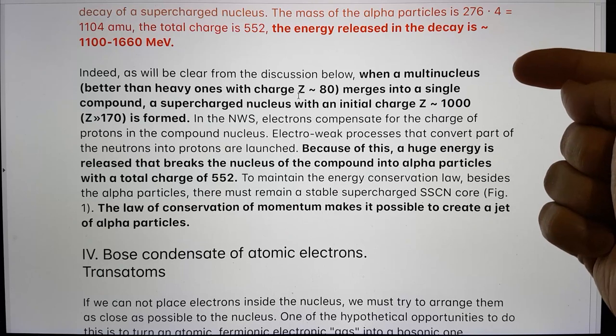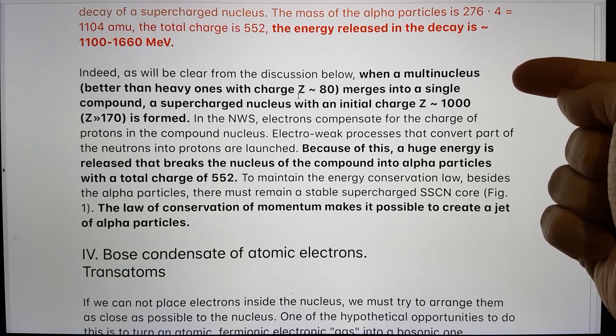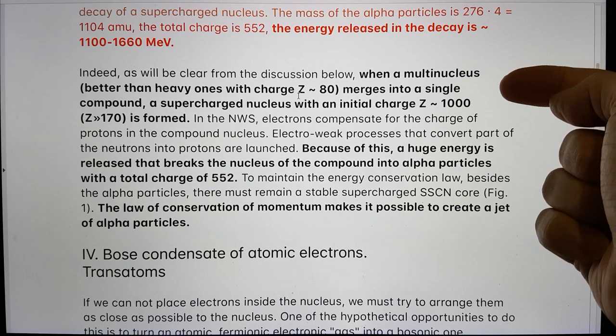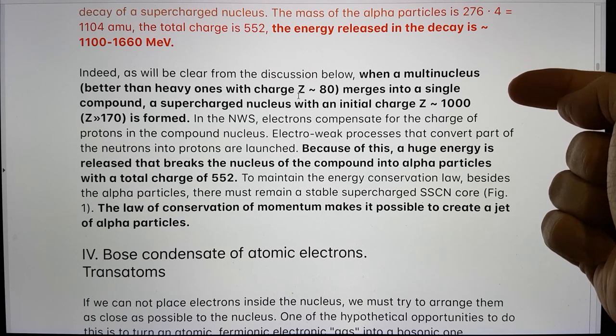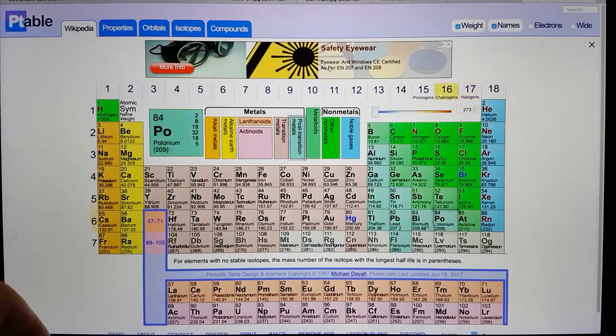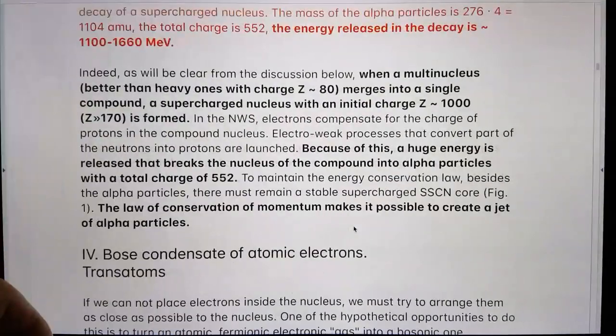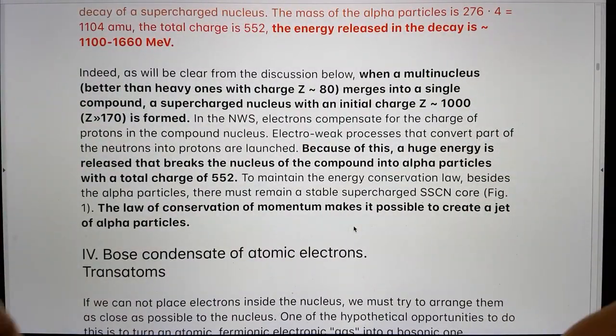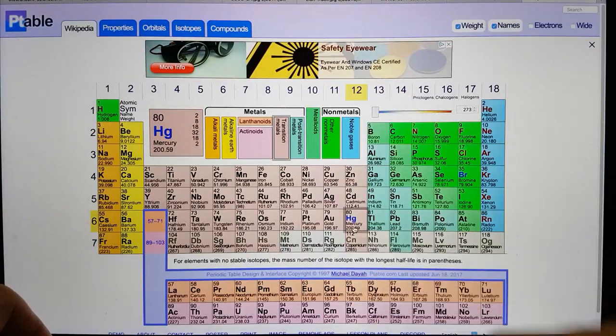Indeed, as will be clear from the discussion below, when a multi-nucleus, better than heavy ones with a charge of Z equals 80, merge into a single compound. So let's just have a look at what Z equals 80 is. So we've got 80 here as Mercury.